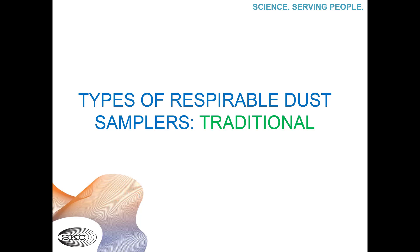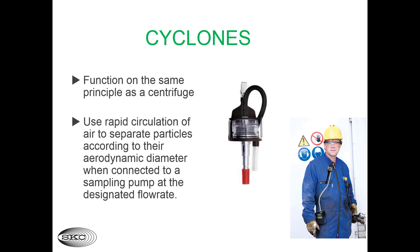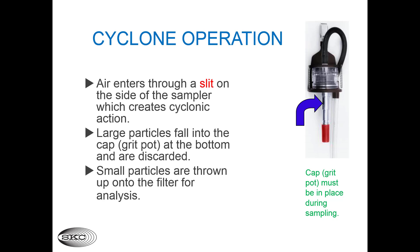Next, let's review the types of respirable dust samplers that are currently available, starting with traditional samplers. The traditional respirable dust sampler that has been used for decades in the industrial hygiene profession is a cyclone. Cyclones function like a centrifuge — they use rapid circulation of air to separate the small particles from the larger particles in the dust cloud when connected to a sampling pump operating at the designated flow rate.